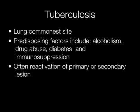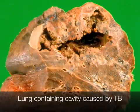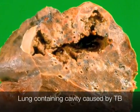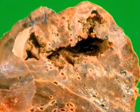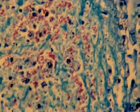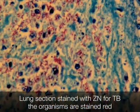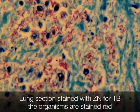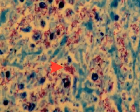The lung is the commonest site for tuberculosis. Predisposing factors include alcoholism, drug abuse, diabetes and immunosuppression. There is often reactivation of primary or secondary lesions. This lung from a patient who died of tuberculosis shows a huge cavitating lesion. A Ziehl-Neelsen (ZN) stain for TB shows the organisms stained red, standing out against the blue background.